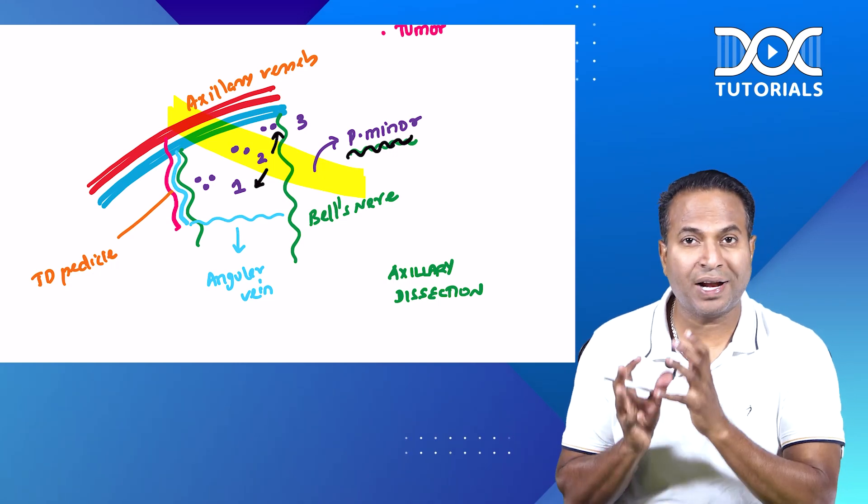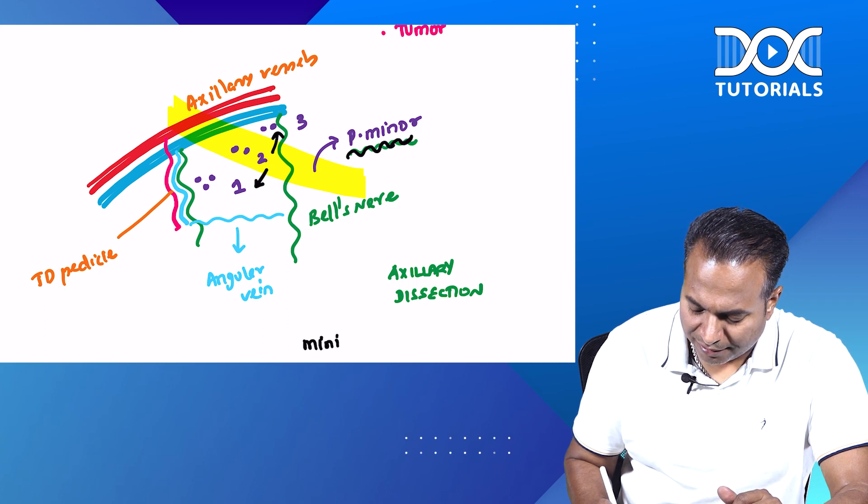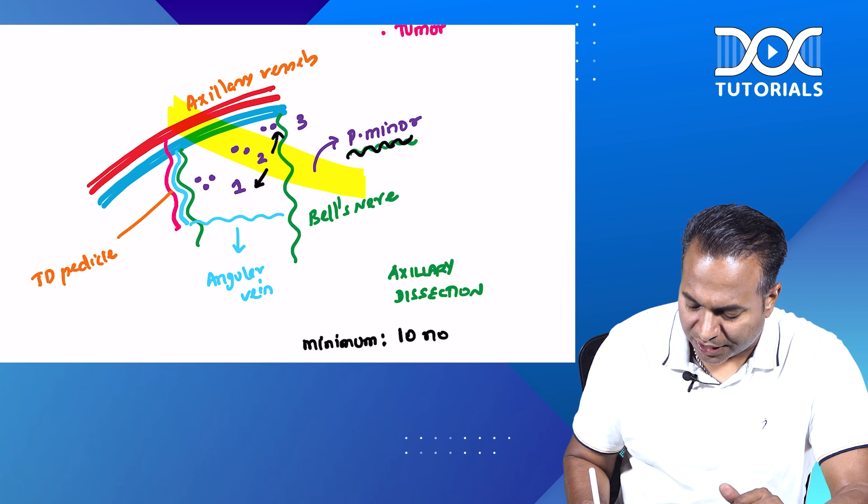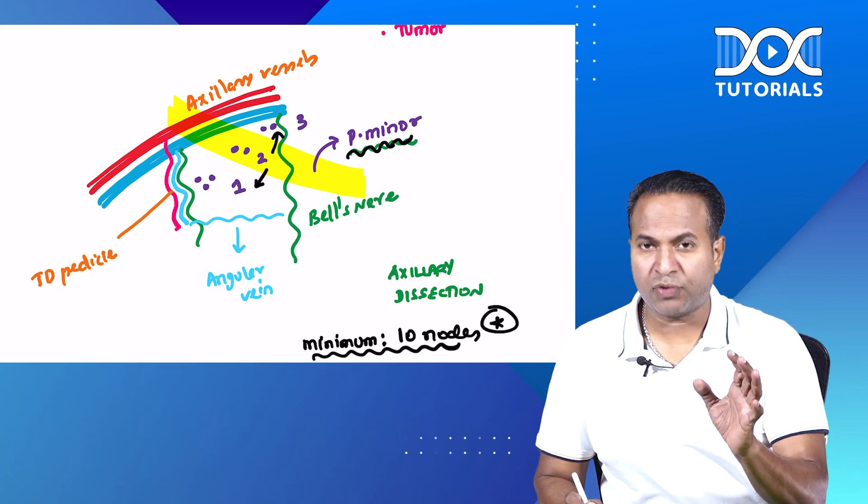All these nodes will be completely removed in an axillary dissection. And the minimum number of nodes that should be retrieved is 10 nodes in cancer breast. Please don't forget.